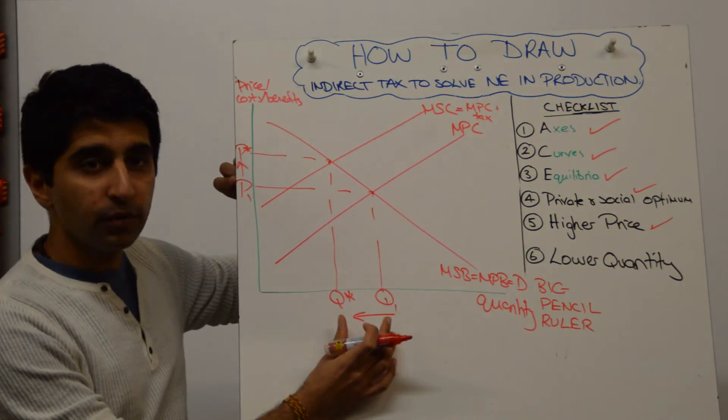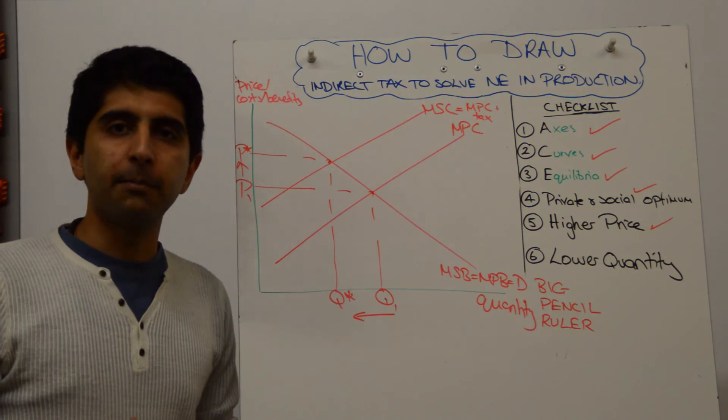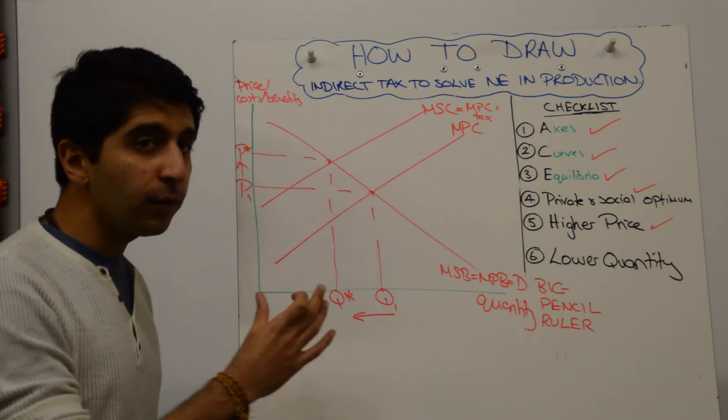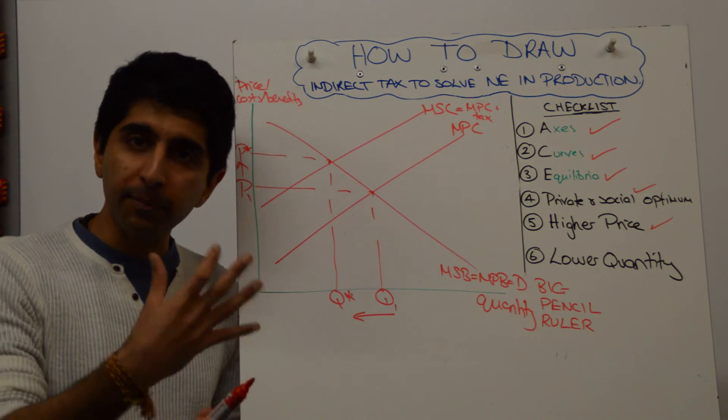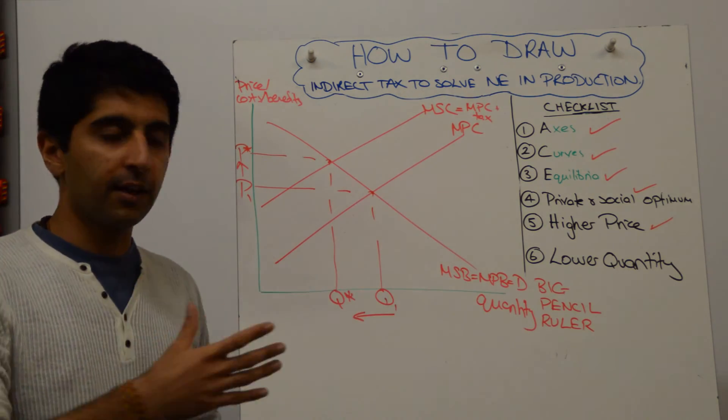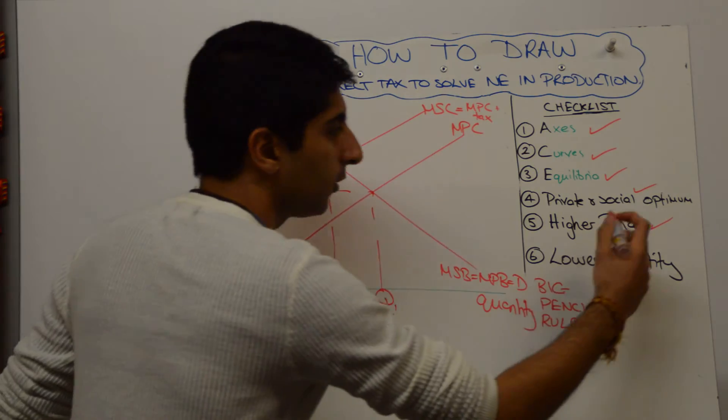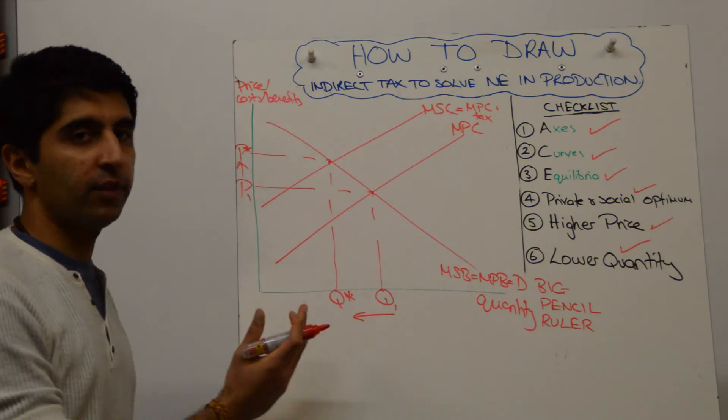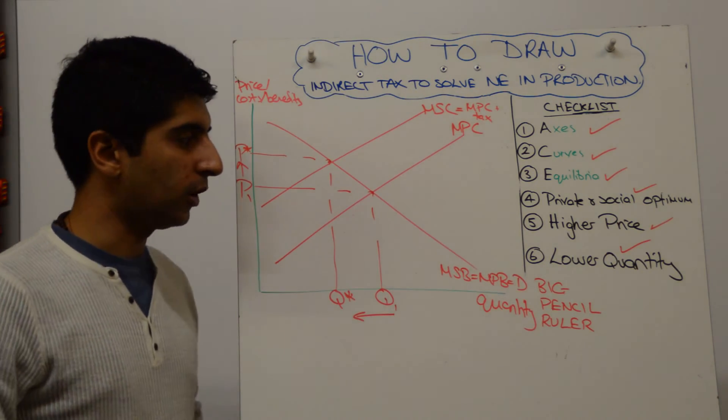If we didn't do the arrows, we might just think this is a standard market failure diagram. But the arrows imply that there is a policy here, that something has changed, which has meant that the quantity has reduced and the price has gone up. So we've shown the higher price and we've shown the lower quantity back towards the social optimum.